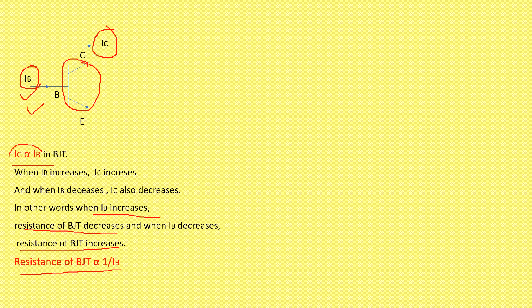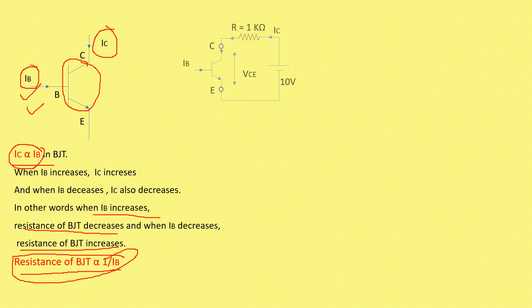These two equations will take us to the terms cutoff, saturation, and active. In the diagram, one supply of 10 volts, a resistance of 1 kilo ohm, and BJT is connected between two terminals. Now if IB is equal to zero milliampere, so nothing is connected at the base terminal. When IB is zero, resistance of the BJT is inversely proportional to IB, meaning the resistance of the BJT is infinite. So when resistance is infinite, there is no current flowing in the circuit. When resistance is infinite, IC is zero — that is our cutoff condition.